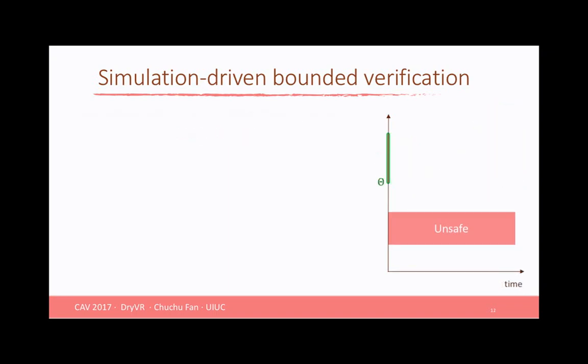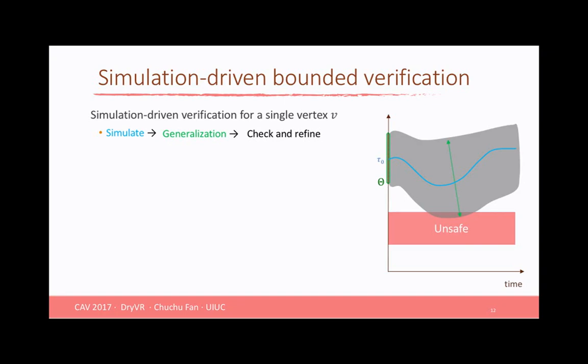There's a fairly straightforward way to do this called simulation-driven approach. I'm going to show you how to use the simulation-driven approach to do the safety verification for a single vertex of the transition graph. So from the initial set theta, we first find a representative state and simulate from that state. Then we generalize this single simulation trajectory to a tube, such that this tube conservatively contains all the trajectories starting from the initial set theta. Next, we're going to check this tube. Because this tube is over-approximation, if it's disjoint with unsafe, the system is safe from initial set theta. But if there is overlap,